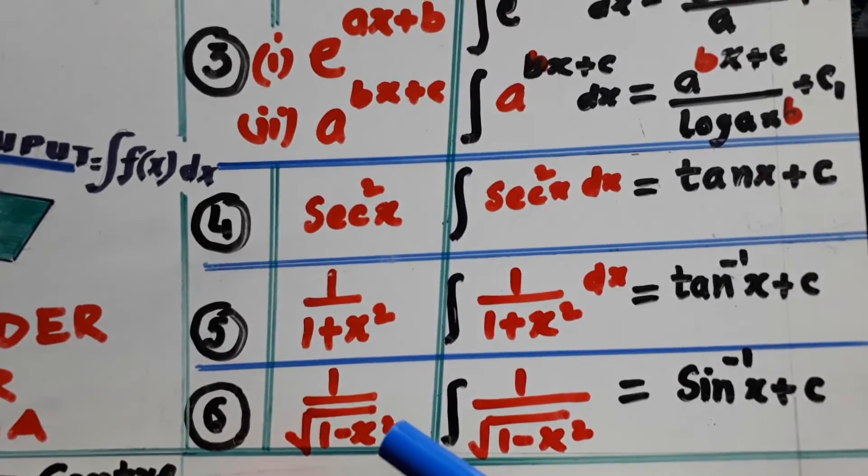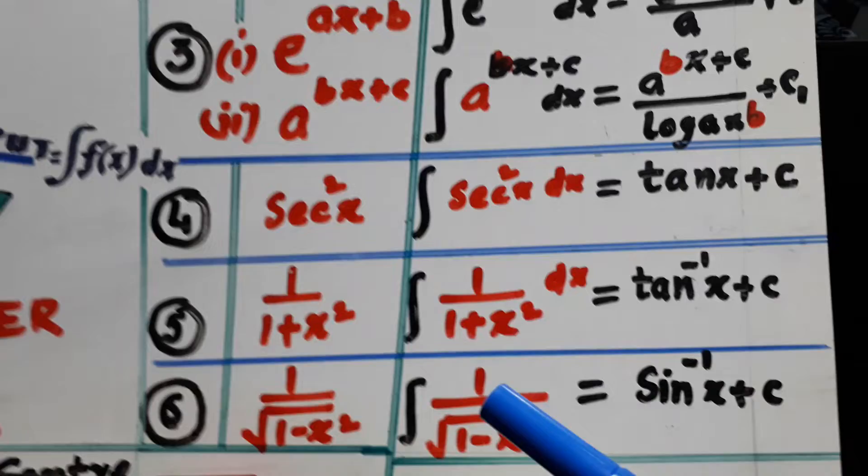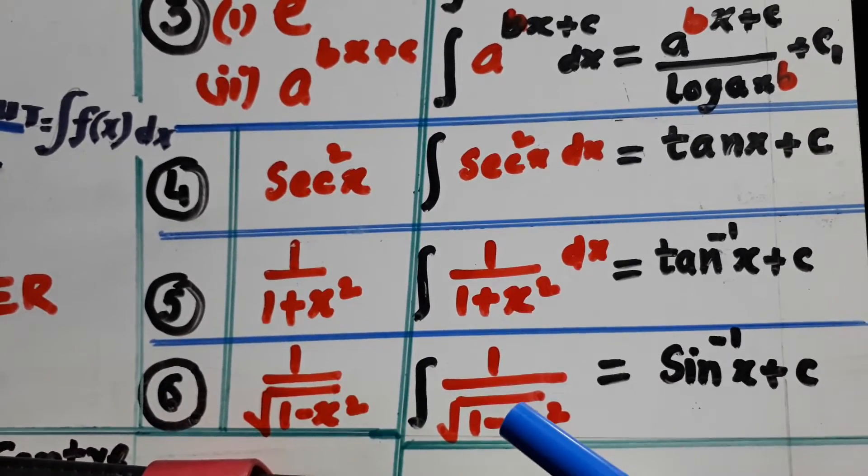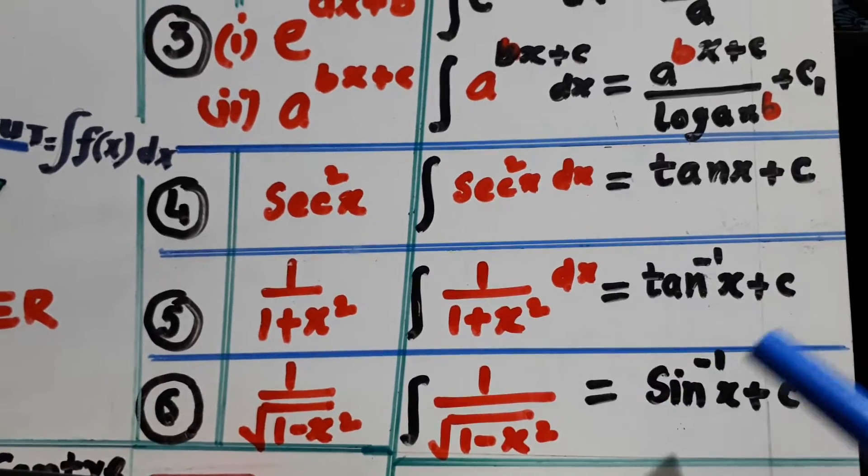Similarly, 1 over √(1-x²) goes into the machine, goes into the integration machine, and the result is sin^(-1)x plus c.